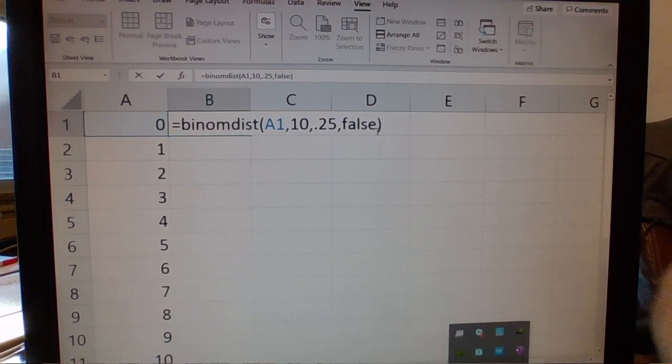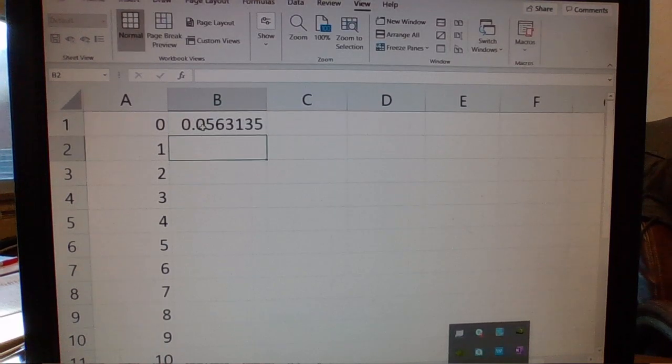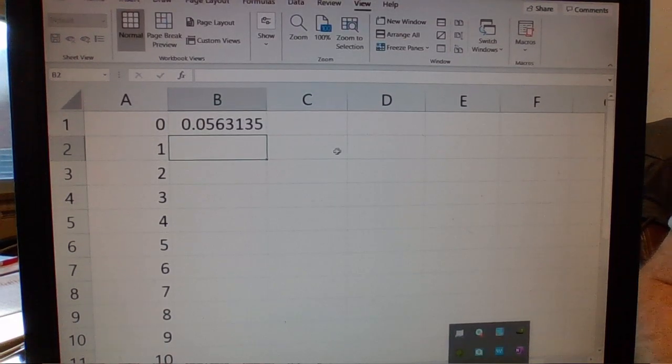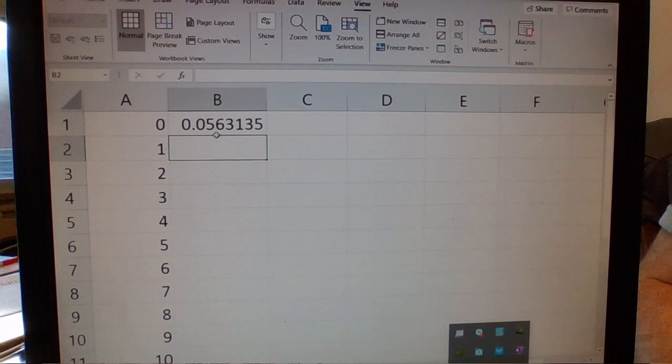Basically, if I wrote true and asked for cumulative, then when I get down here to 1, it would take the probability of 1 and probability of 0 and add them together. If I got to 2, it would take the probability of 2, 1, and 0 and add them together. And I don't want that. I want the individual probability. So what we're seeing here is that there would be a 5.6% chance that when you take this quiz blindly by just answering randomly, you're going to get a 5% chance that you get none of them right.